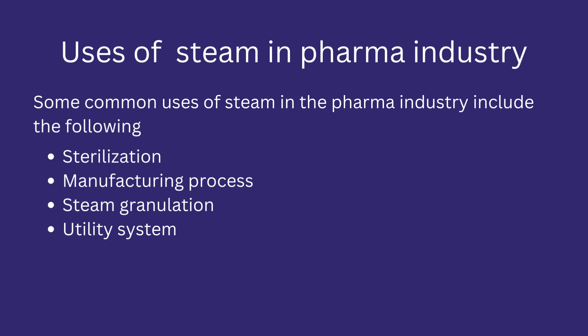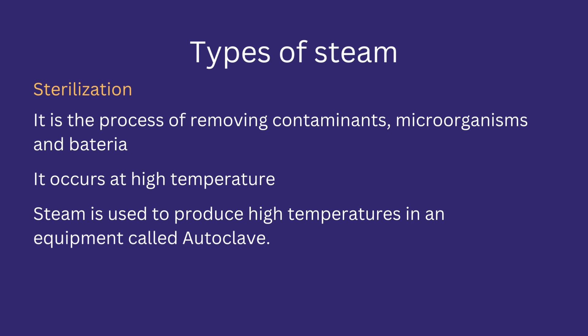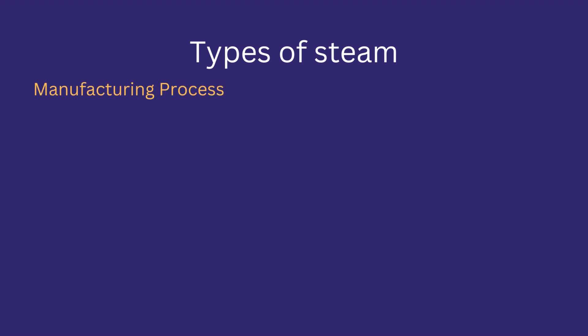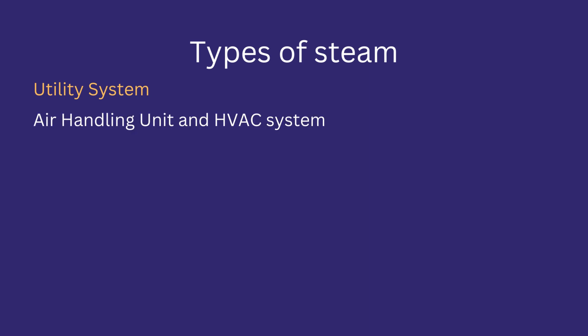Let's discuss some uses of steam in the pharma industry. Some common uses include sterilization, manufacturing processes, steam granulation, and utility systems. Sterilization is a process of removing contaminants, microorganisms, and bacteria that are harmful to the product. Steam is also used as part of utility systems such as air handling units and HVAC systems, where it is used to produce heat in various parts of the system.